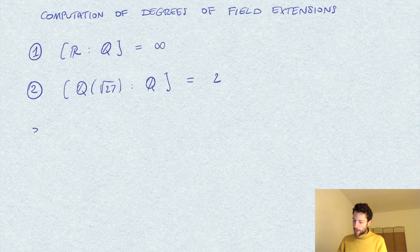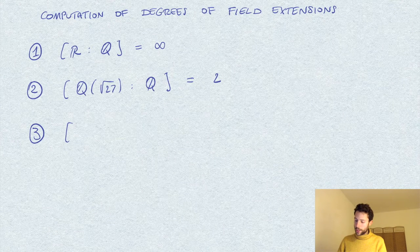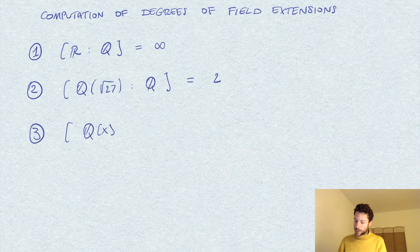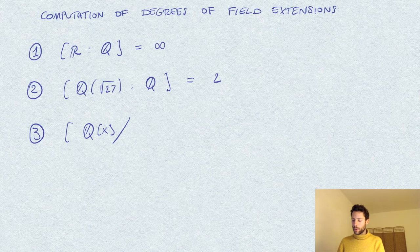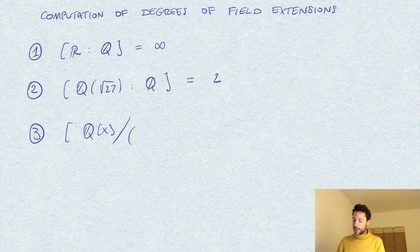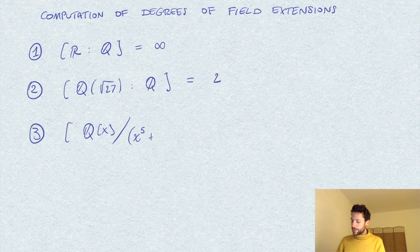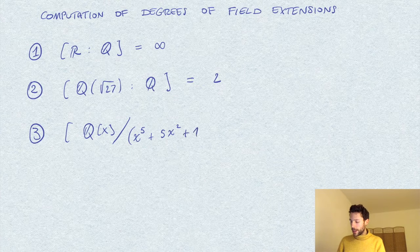And third, we show that the extension Q[x] quotient, so the polynomial ring with rational coefficients, quotient by the ideal generated by the polynomial x^5 + 5x^2 + 10.